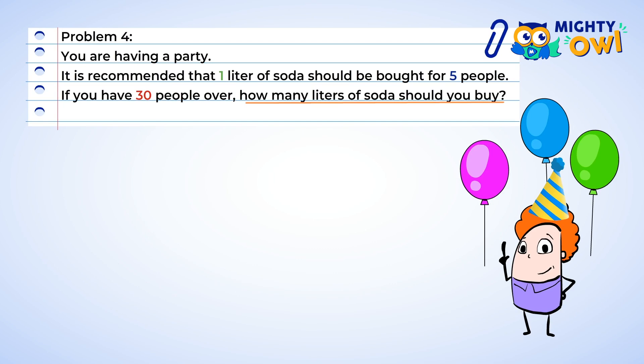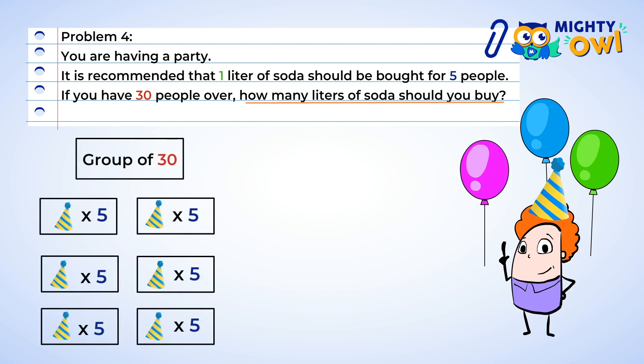You're going to be having a party, and it's recommended that one liter of soda should be bought for five people. If you're having 30 people over to your party, how many liters of soda should you buy? Well, let's start by grouping our 30 guests into groups of five. Looks like we have six groups.